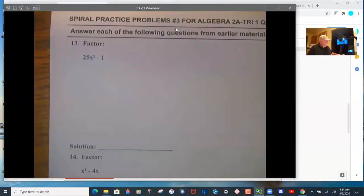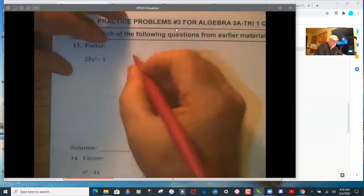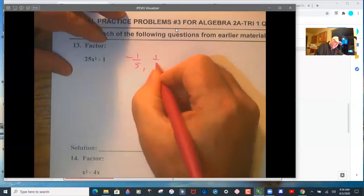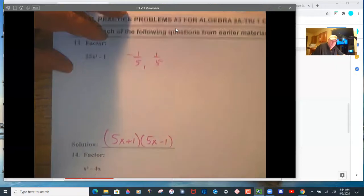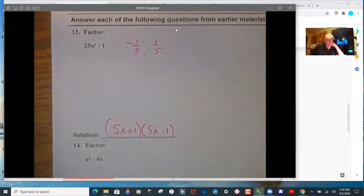Okay, 25x squared minus 1. You need to find the zeros. And they are negative 1/5 and 1/5. So what does that mean? 5x plus 1, 5x minus 1.